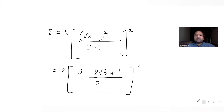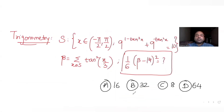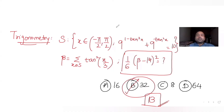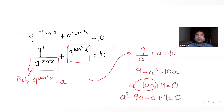The answer is 32, which matches option B. To summarize: we substituted 9^(tan²x) = a, solved the quadratic to get a = 9 or a = 1, and back-substituted to find the values of tan x.